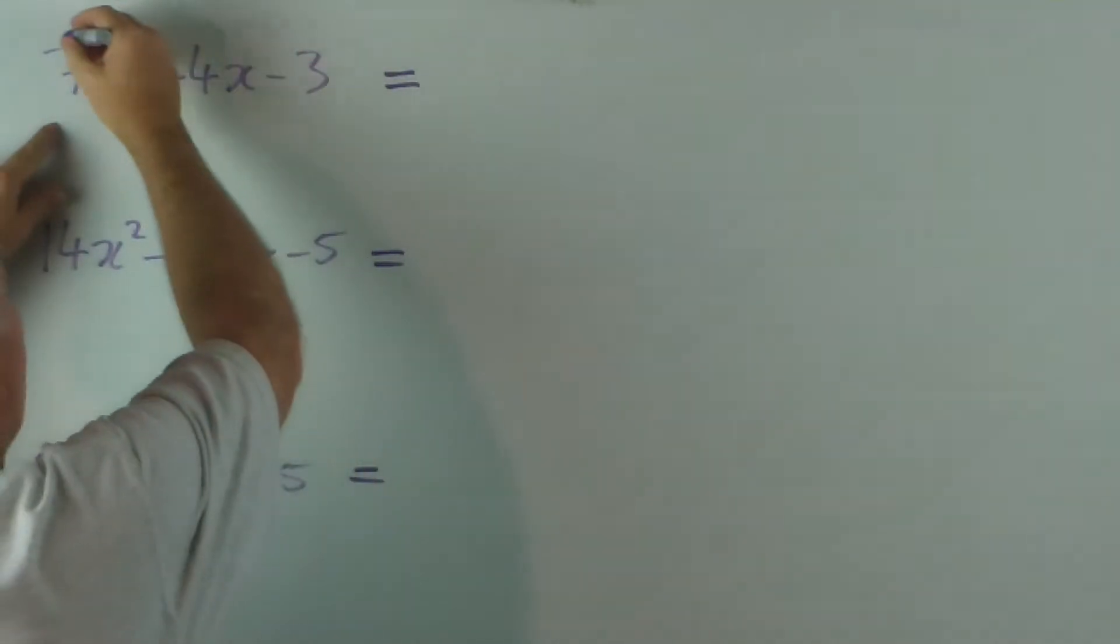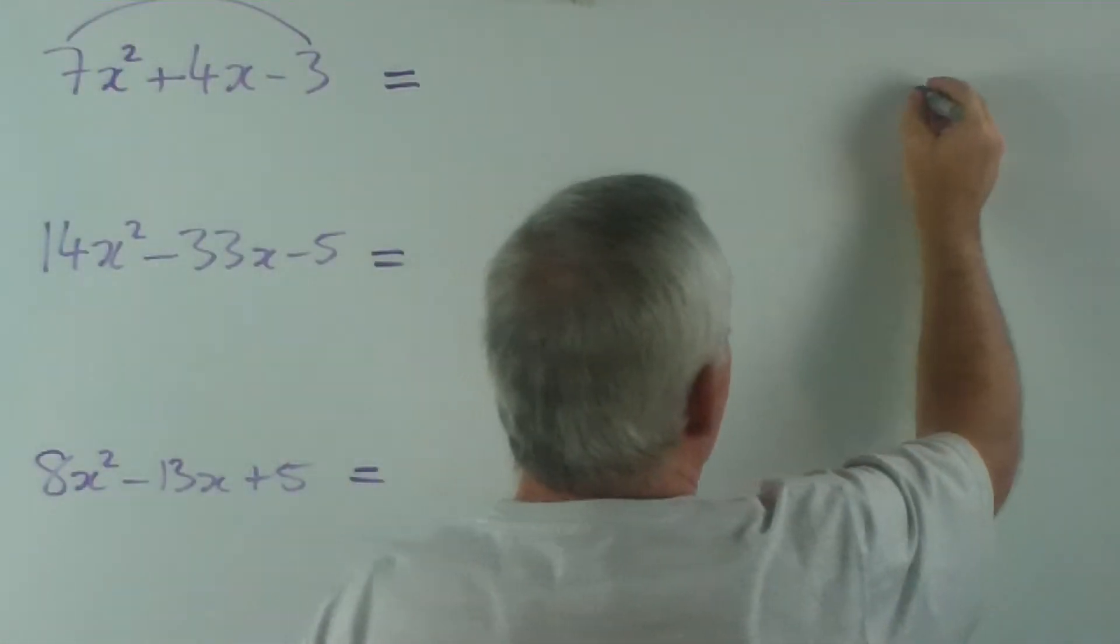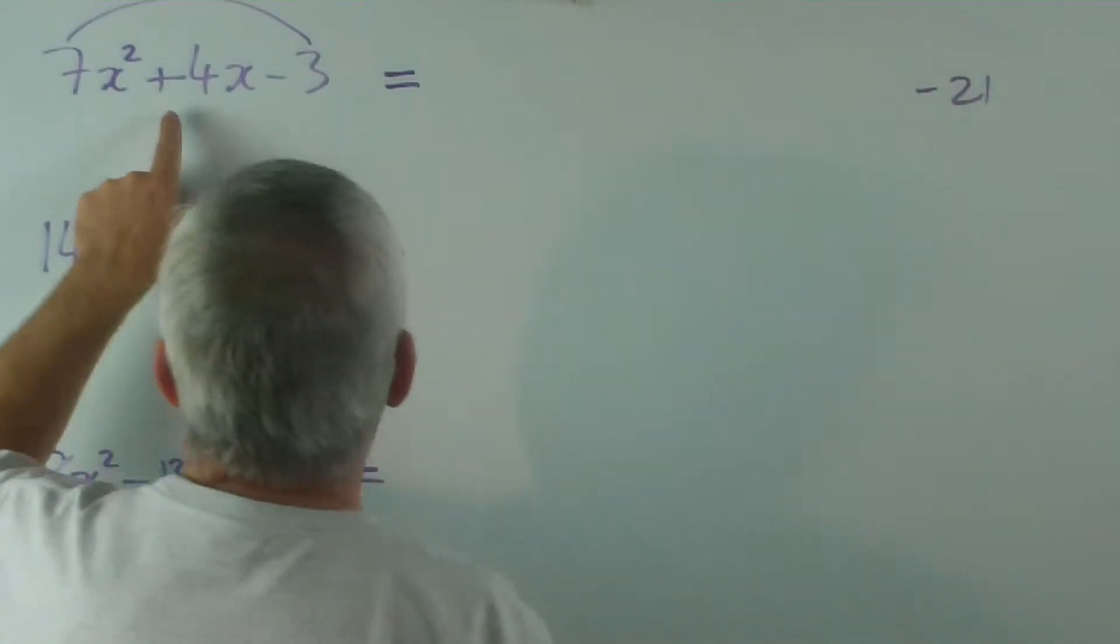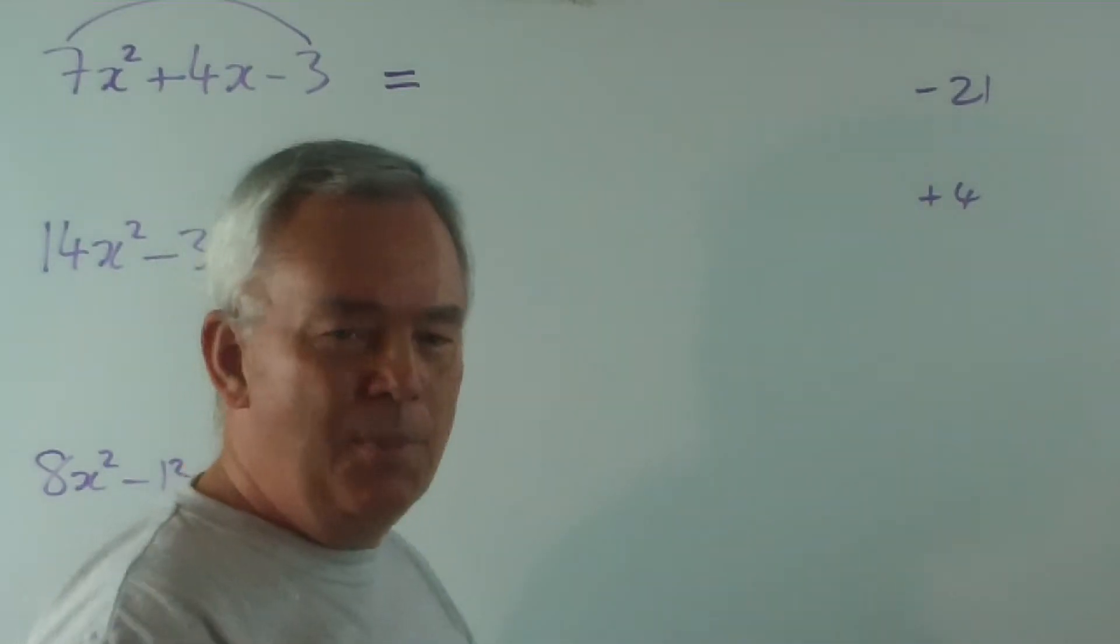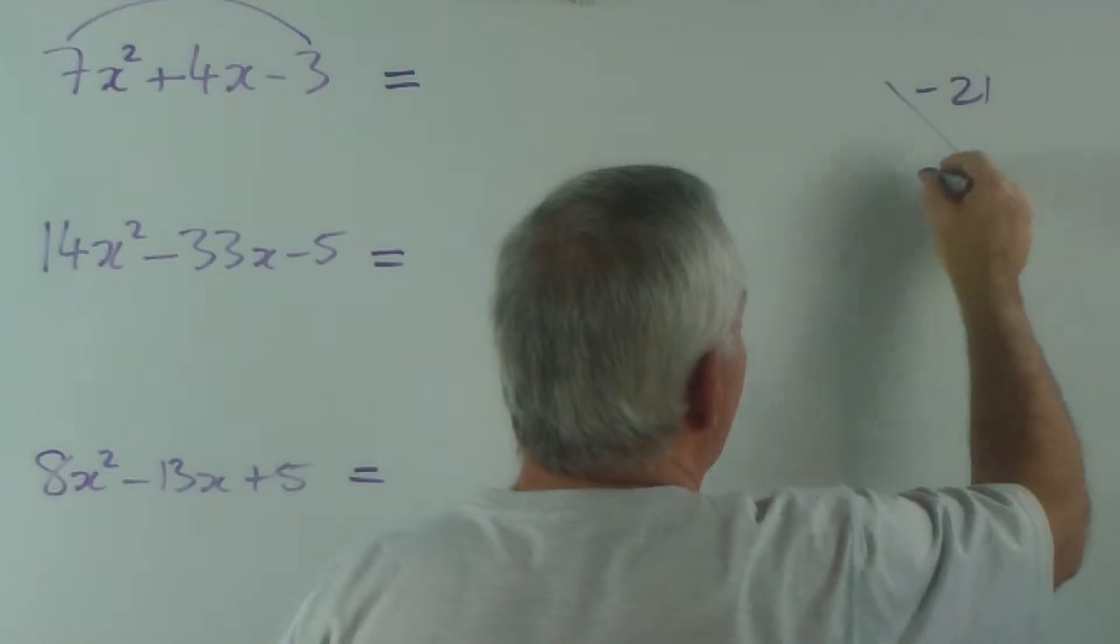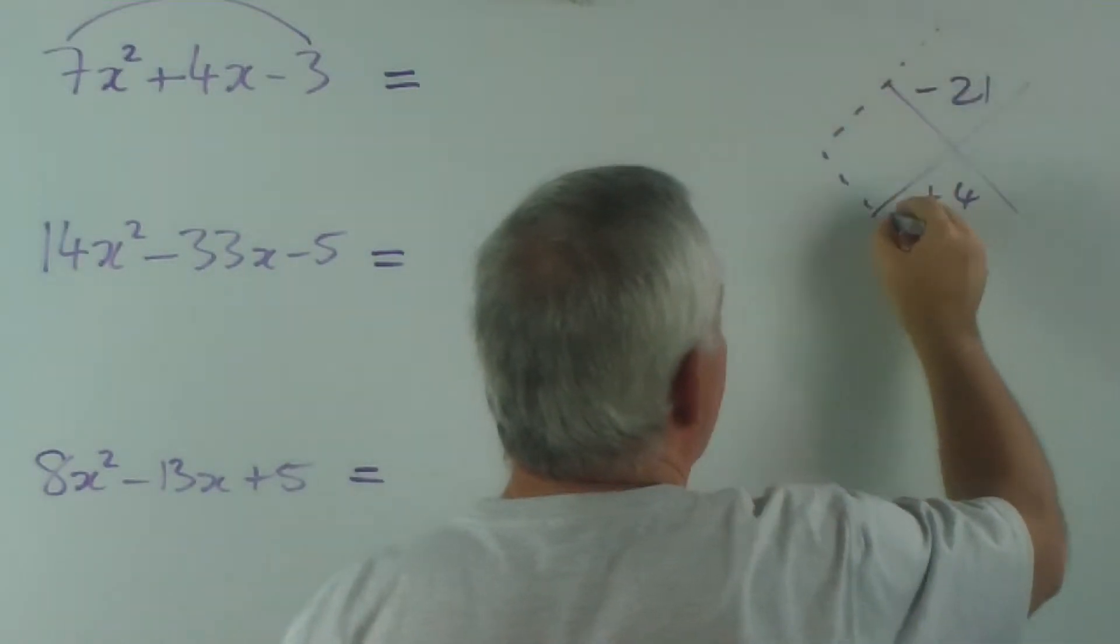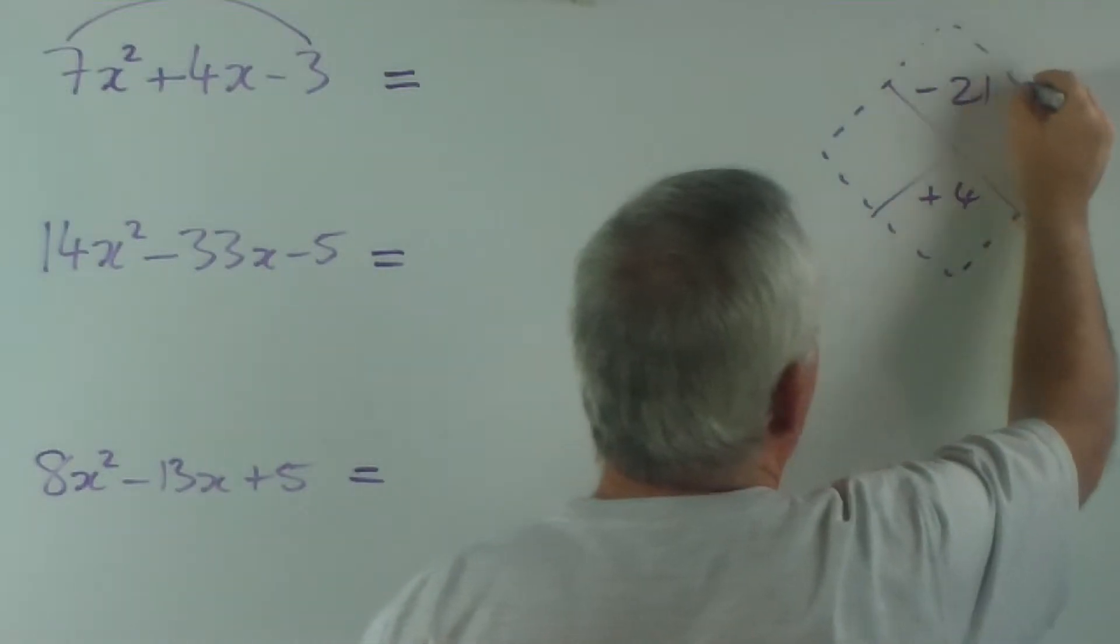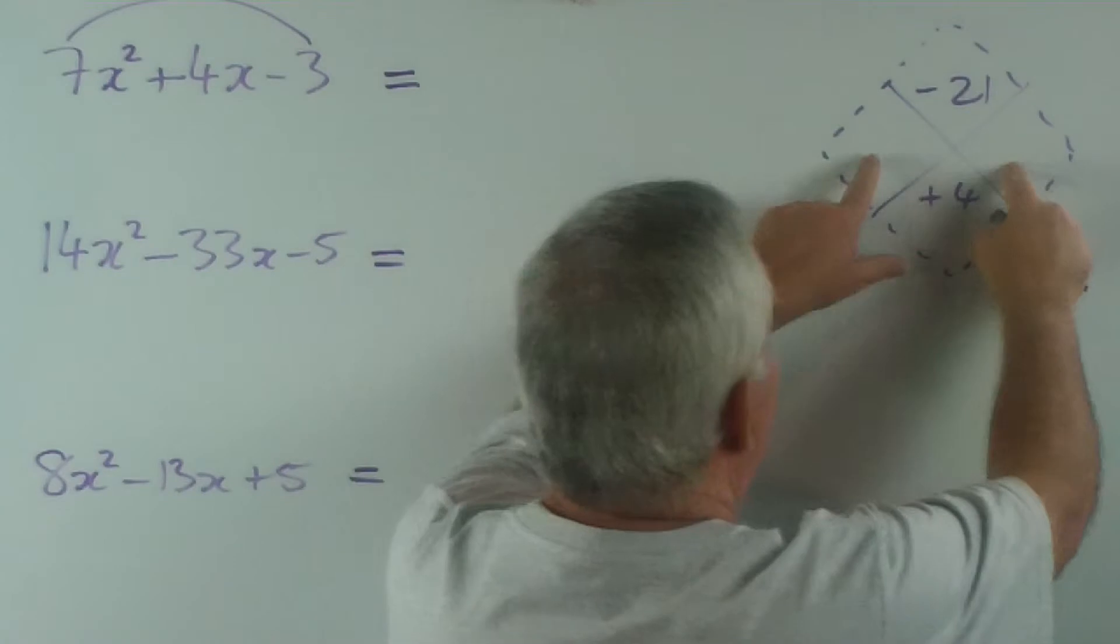But it still uses this same method of multiplying 7 by minus 3, you get minus 21, and writing the plus 4 underneath. Now the reason it's called the diamond method is that often teachers will encourage you to draw a cross like this and even to imagine a box around it looking a bit like a diamond. And we're going to fill in these two sides.